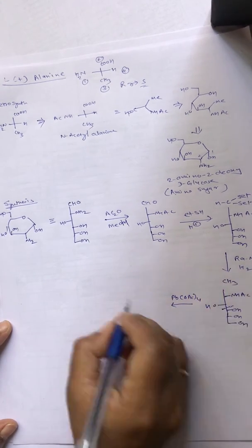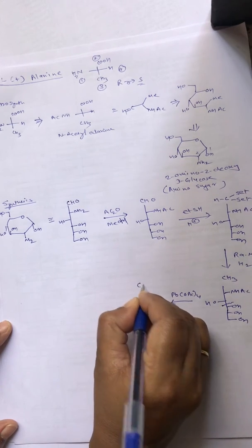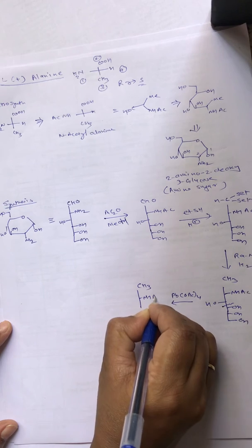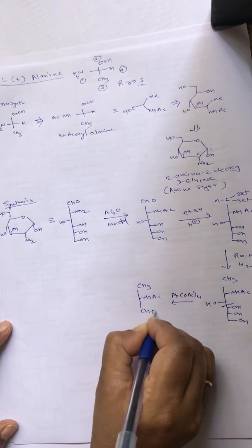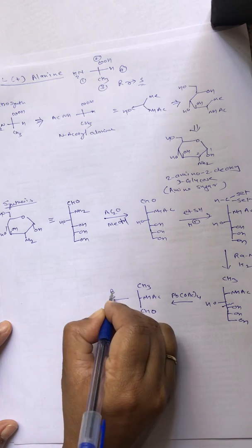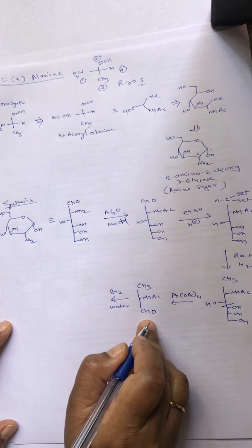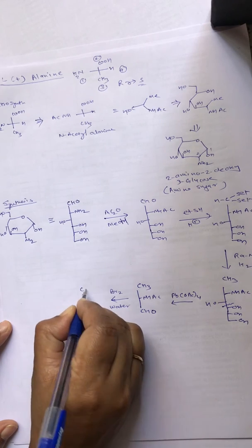We will be concentrating on the upper path, which will give us CH3-NH-AC and CHO. Bromine water is a mild oxidizing agent which will oxidize CHO into COOH.